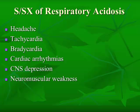Signs and symptoms of respiratory acidosis include headache due to cerebral vasodilation, and initial tachycardia due to hypercapnia. As it becomes more severe, you'll see bradycardia due to increased potassium levels, then cardiac arrhythmias due to decreased myocardial cell pH and hyperkalemia. You'll see CNS depression — confusion to coma — as carbon dioxide crosses the blood-brain barrier very easily, and neuromuscular weakness such as hyporeflexia and flaccid paralysis, usually due to the hyperkalemia.